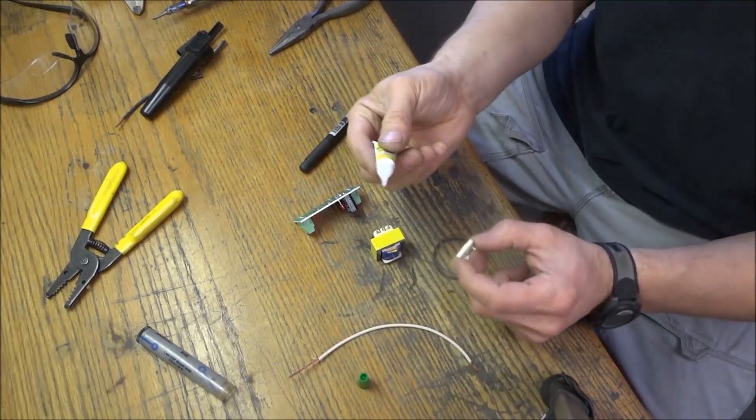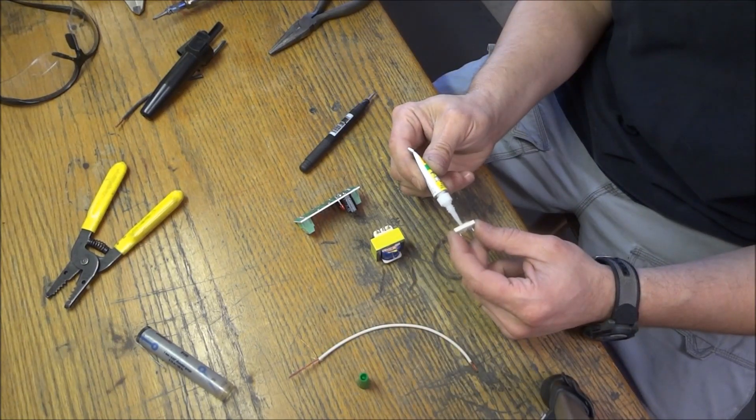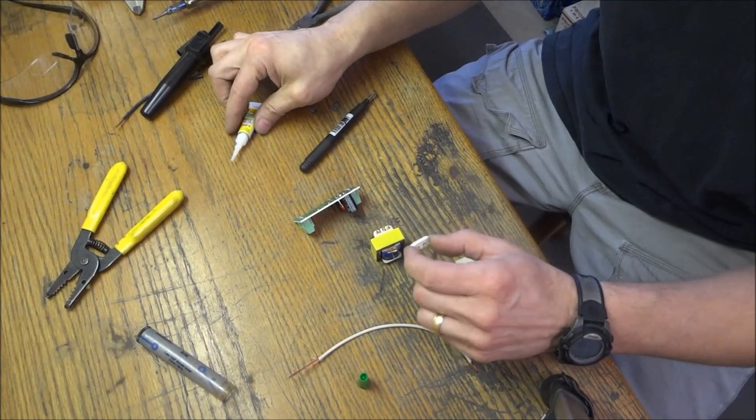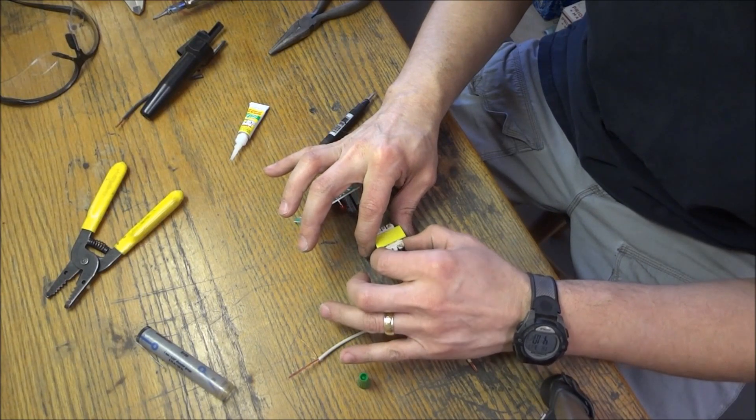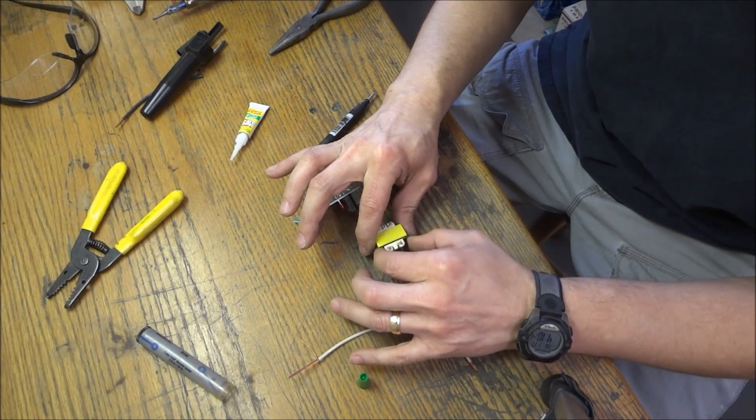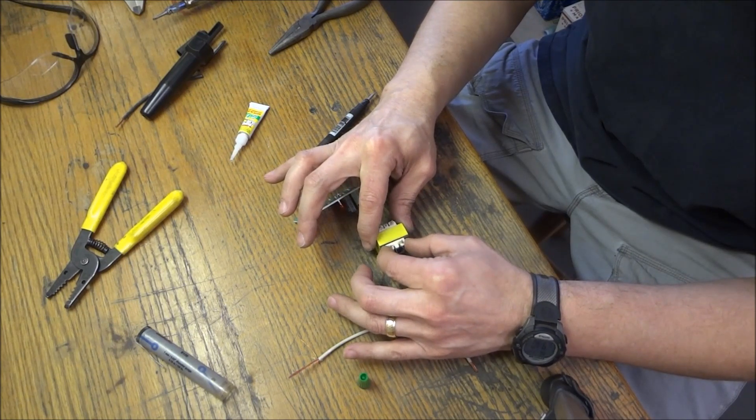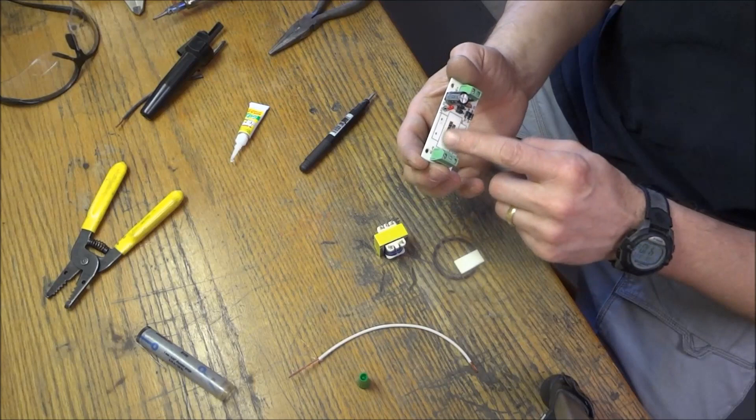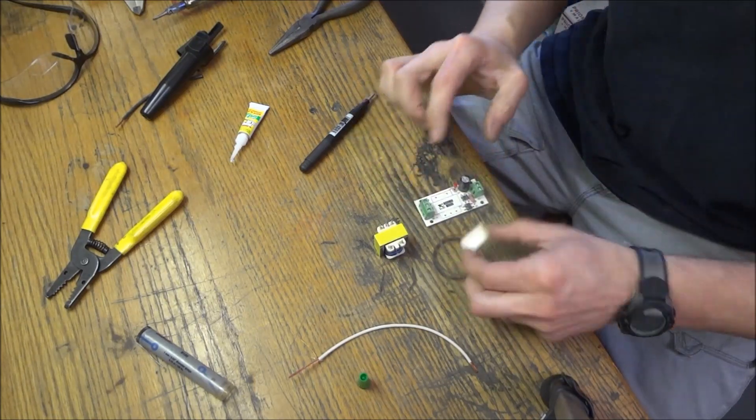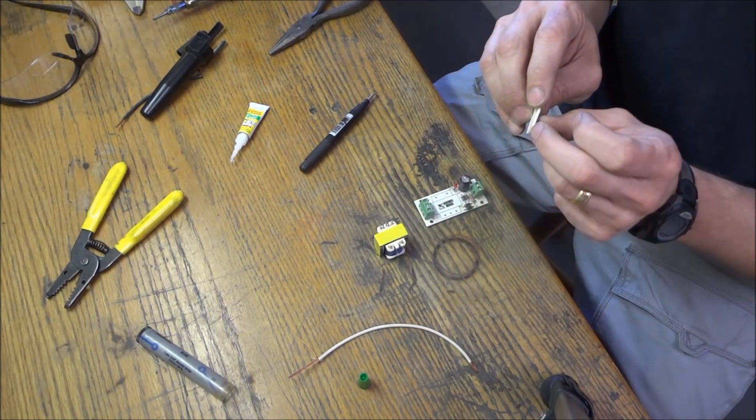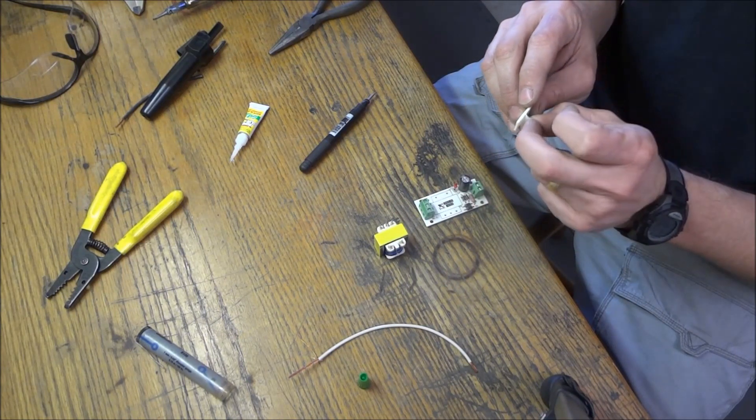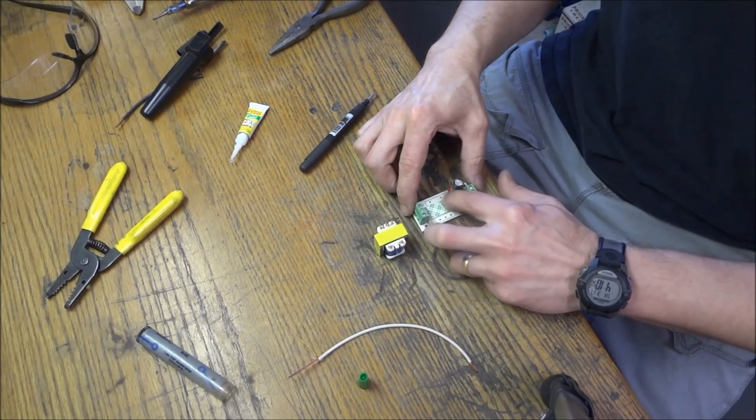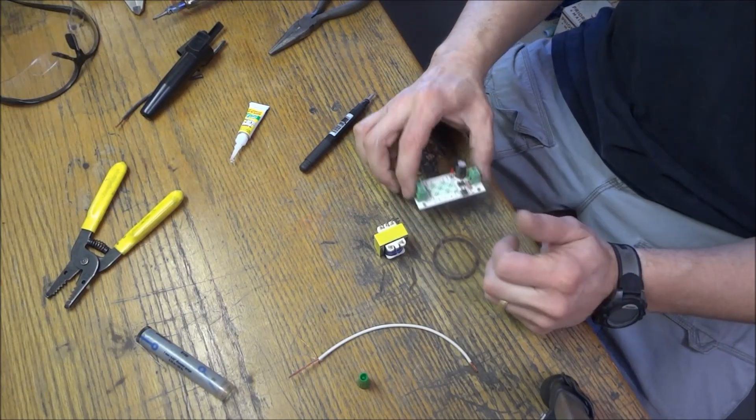All right, so I got some superglue gel here. Just going to put a little right here. See if we can get this in there. Okay, and another thing we're going to do is when this board gets in there, it's going to sit right here. So I've got some double sided tape here and I'm going to just stick that in there just to hopefully help facilitate some dampening, vibration dampening.